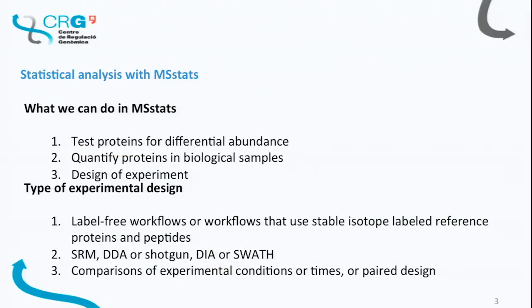What does MS-STATS do? With this R package we can do different things. First, we can test proteins for differential abundance. Second, we can quantify or estimate protein abundance in a single sample. Third, we can use our data as a pilot experiment to predict and design future experiments. MS-STATS can deal with different types of datasets — label-free or with internal standards — and with different acquisition methods: SRM, shotgun, or data-independent acquisition.